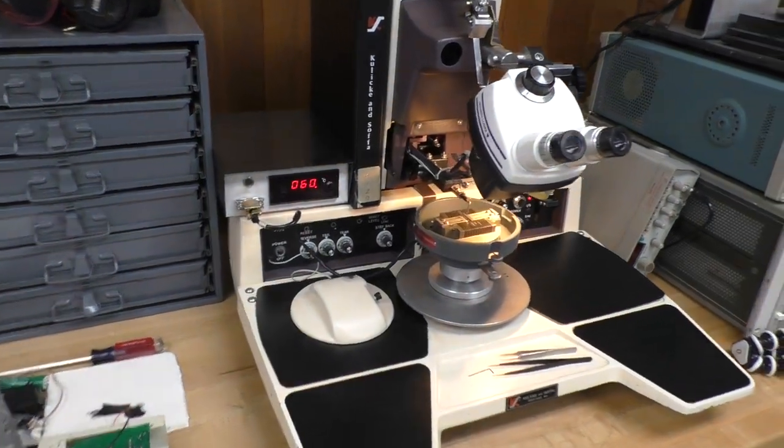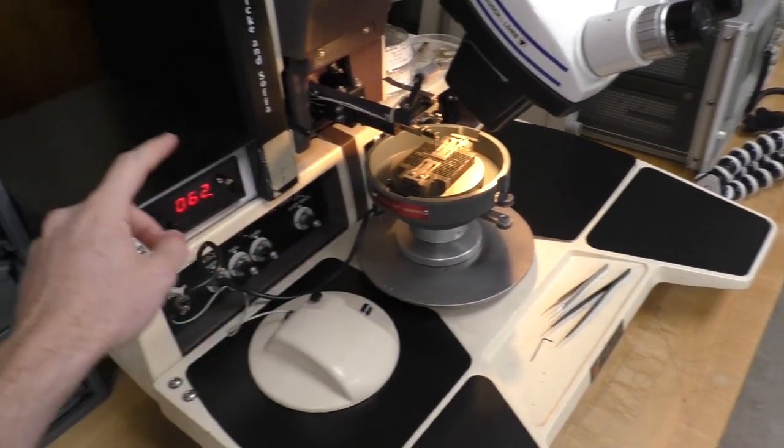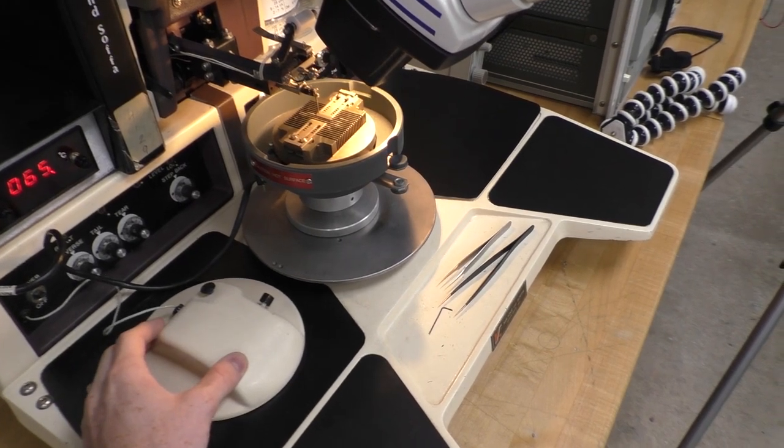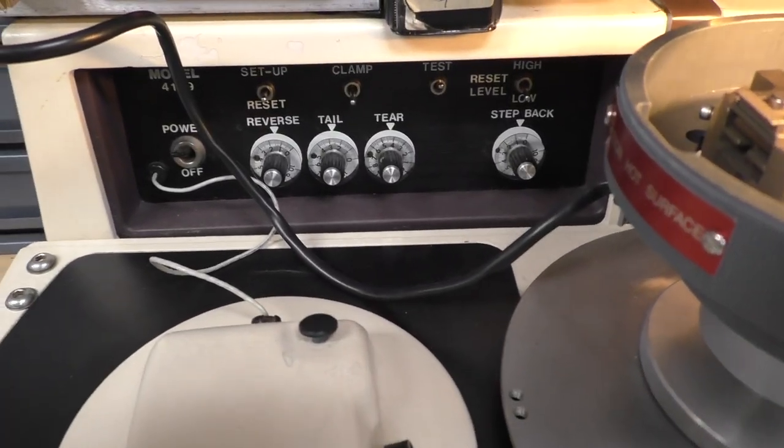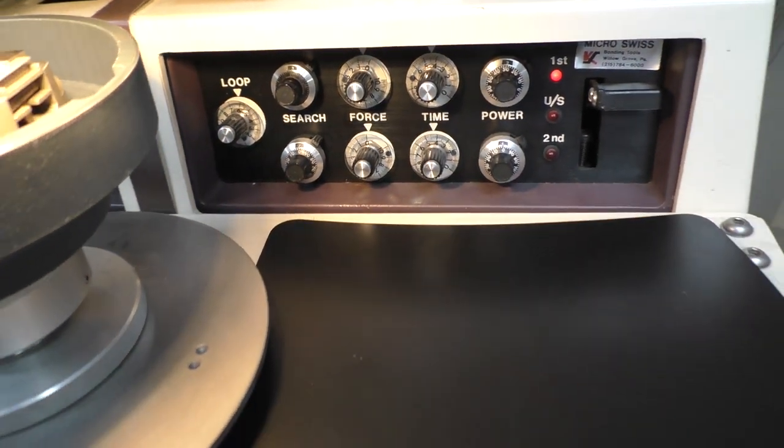Remember, as I said before, this is the work holder where your chip goes, and this is the power supply for that heater. This is the mouse, which is sometimes called the chessman, and that allows you to manually move the stage. There's a number of controls for the various settings and power, force, and time of the bond parameters which have to be tweaked.